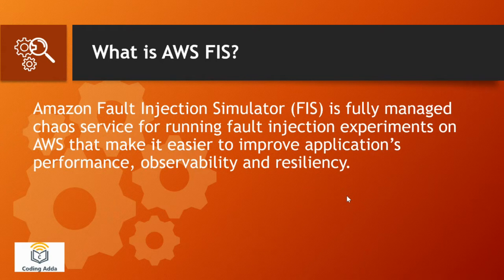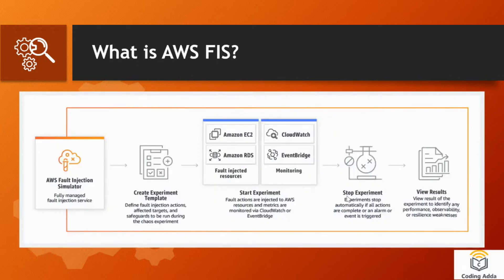Amazon Fault Injection Simulator is a fully managed chaos service using which we can inject some faults onto AWS services, so that we can improve performance, observability, and resiliency of that particular application. This is the FIS tool.